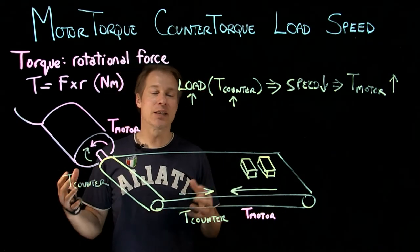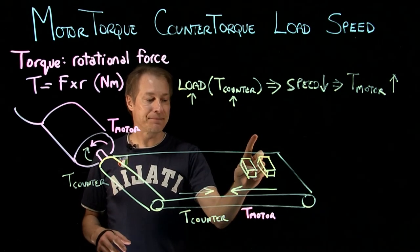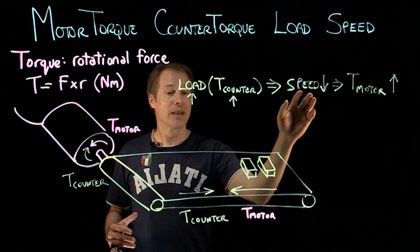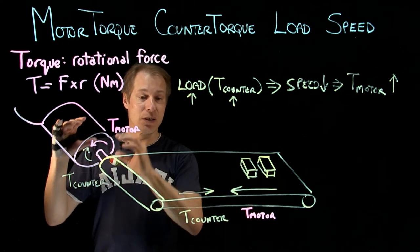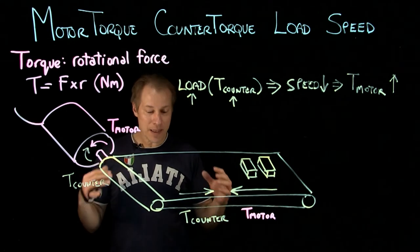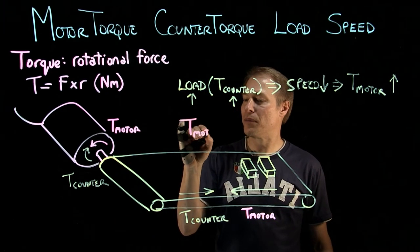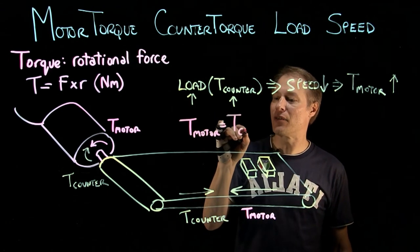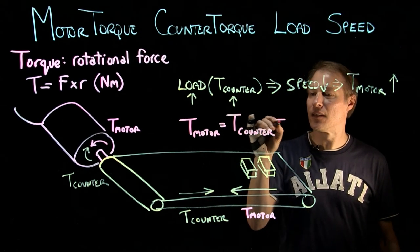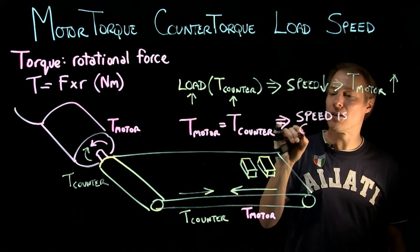Let's look at this daisy chain again. As load goes up, the counter torque goes up — that's the torque acting against the motor torque — which brings down the speed of the motor. When the speed of the motor goes down, the torque of the motor goes up. What ends up happening is when the motor torque equals the counter torque, the speed stabilizes and becomes constant.